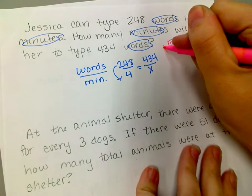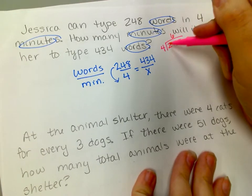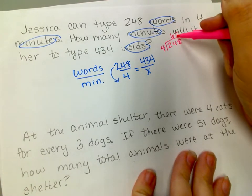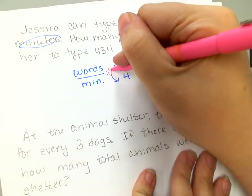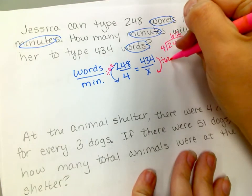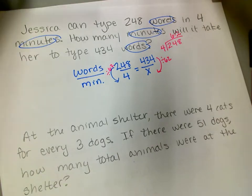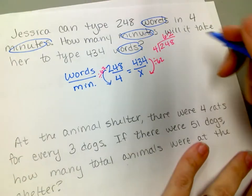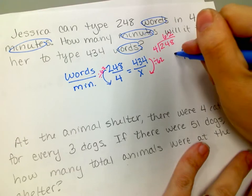Because I could do that in my head. 4 goes into 24 six times evenly, and then it goes into 8 twice. So that means this is dividing by 62, right? So that means here, I have to divide by 62. Okay, and sometimes it's some work to solve these problems. So I'm going to do 434 divided by 62.